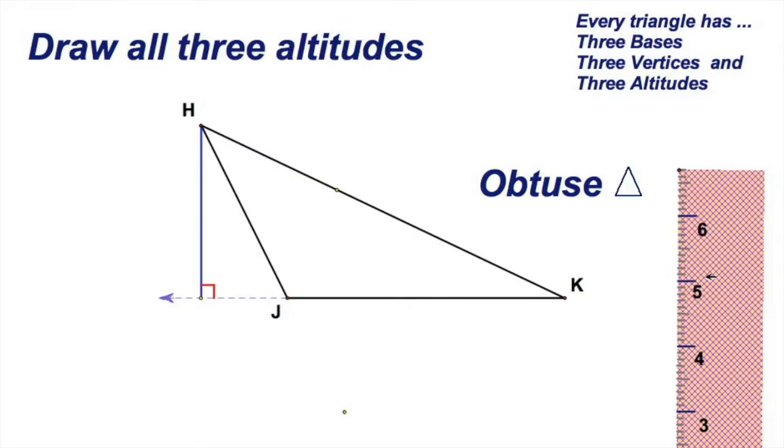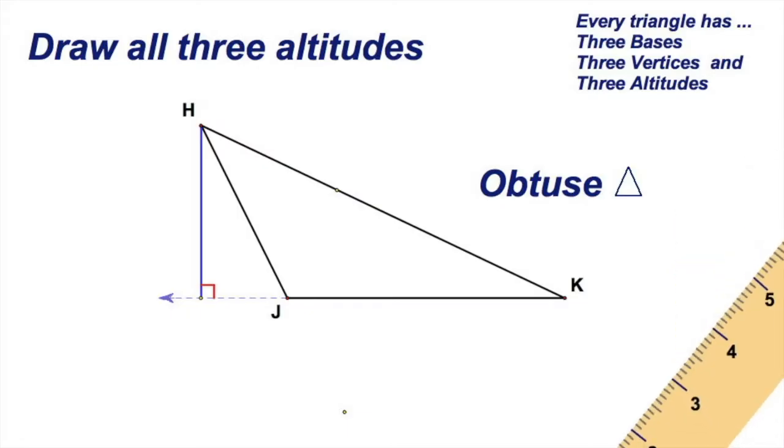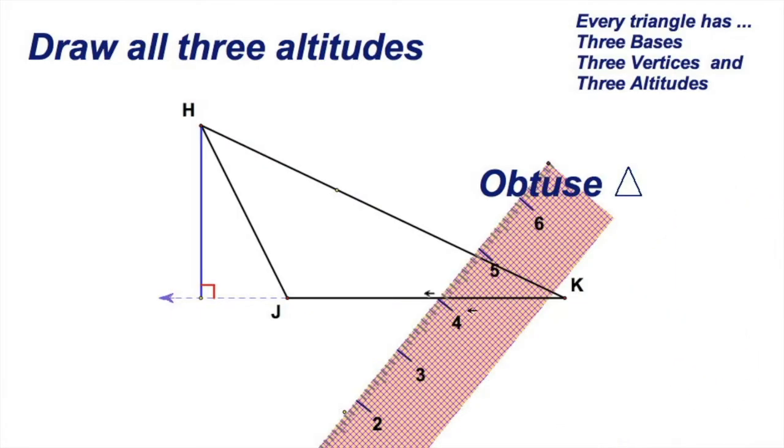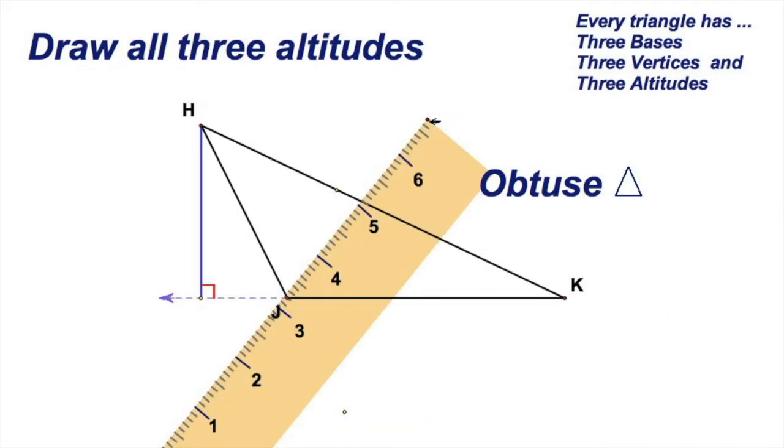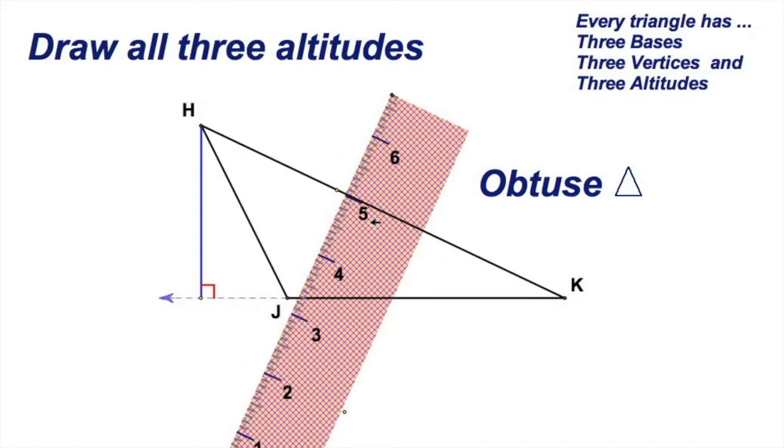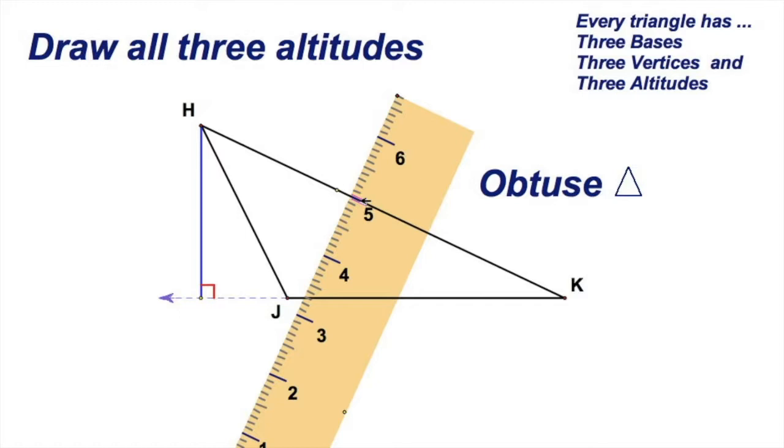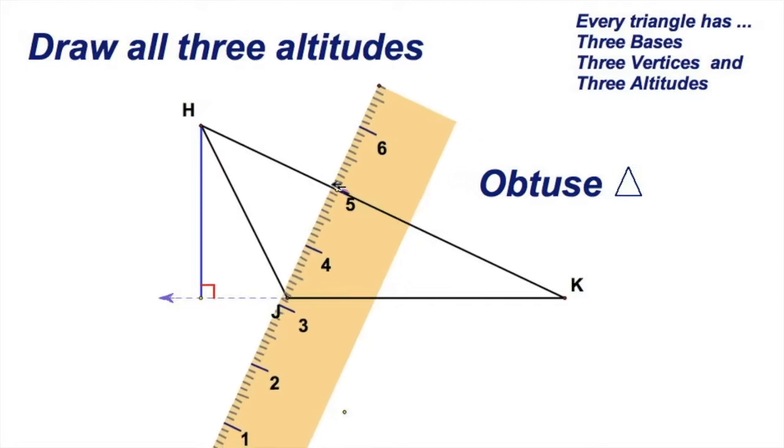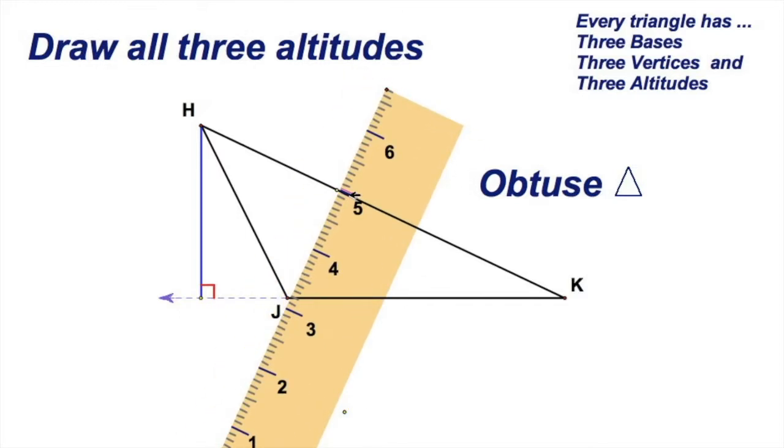So that is one altitude. That altitude is outside of the figure. Now let's see, we've got two more altitudes. I've got another one over here, so let's square it up this way. I'm just squaring up the ruler right there. You can see that this little division mark for the five right here lines up with HK, and I'm squared up. Move it so it's passing through J.